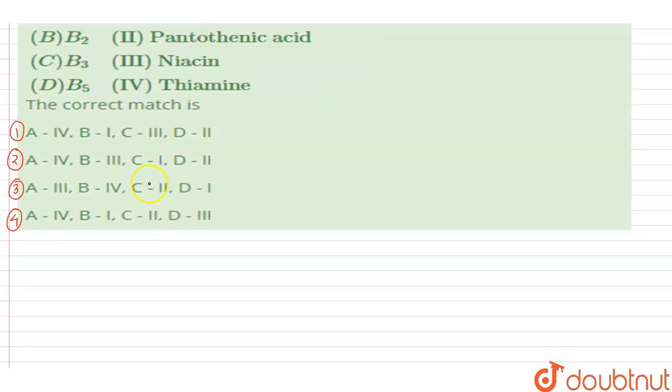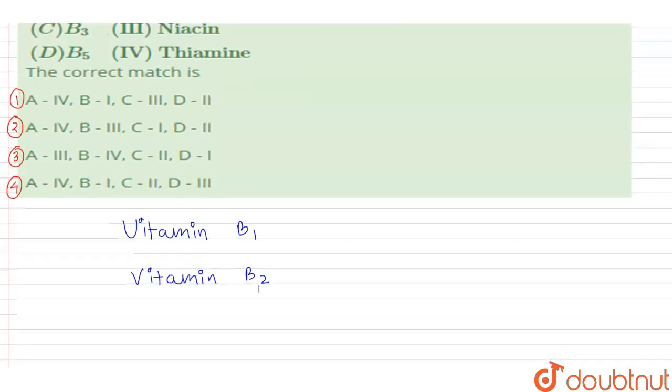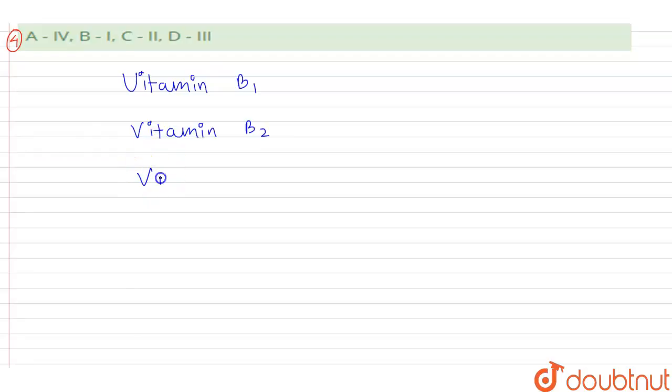So what vitamins are given: vitamin B1, vitamin B2, vitamin B3, and B5. So we have four vitamins given and we just have to match one with another as their other name.